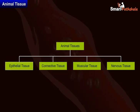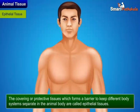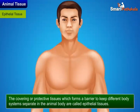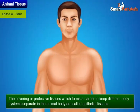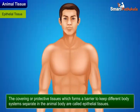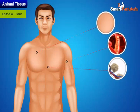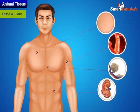In this module we will only discuss epithelial tissue. Epithelial tissue refers to the covering or protective tissues which form a barrier to keep different body systems separate in the animal body. The skin, the lining of blood vessels, lung alveoli, and kidney tubules are all made of epithelial tissue.